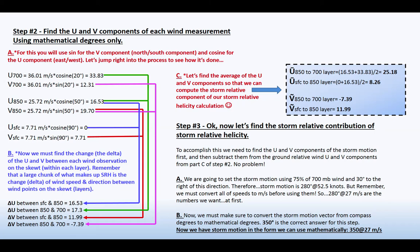Part A, we're going to set the storm motion using 75% of the 700 millibar wind and 30% to the right of this direction. This comes from Maddox from 1976. He was the first to, back when he worked with NSSL, he was the first to complete a study on supercell storm motion and supercell dynamics, intra supercell dynamics. Therefore storm motion is 280 at 52 and a half knots. But remember that we must convert all speeds to meters per second before using them. That's so that we can work with the mathematical frame of reference when we start using the degrees, mathematical degrees. So 280 at 27 meters per second are the numbers we want at first.